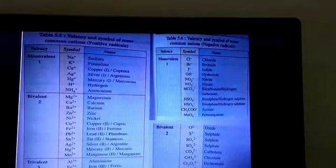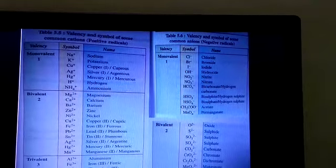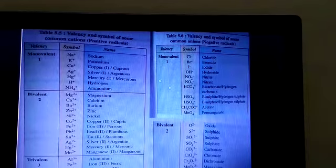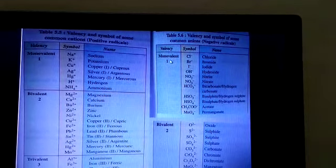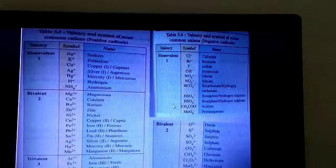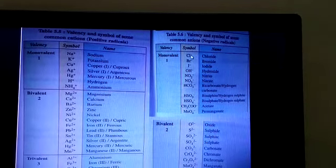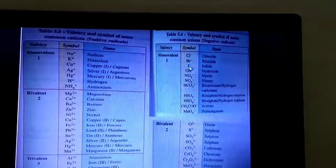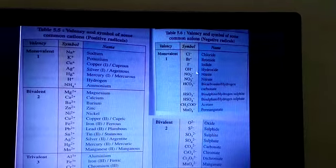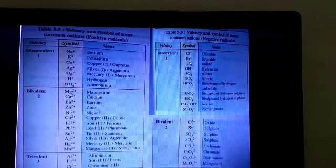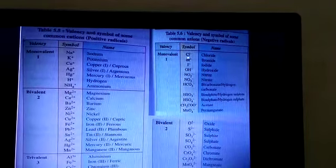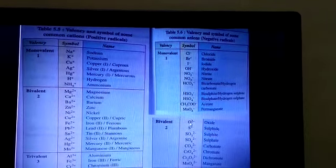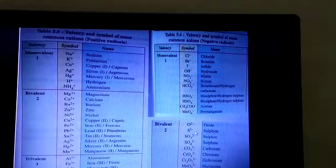And some negative radicals. You can see monovalent, there is also three types: monovalent, bivalent, and trivalent. For monovalent it will be -1, means one negative charge: Cl-, Br-, I-, OH-. So these are the negative radicals containing -1 charge. For bivalent it contains two minus charges: O2-, S2-, sulfite.